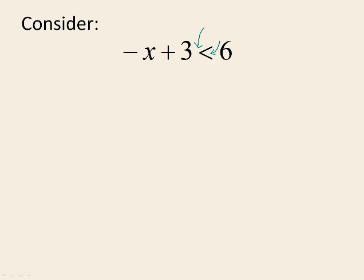Inequalities behave very much the same as equations in the sense that you can add and subtract things from both sides, and you can multiply and divide both sides. But there are one or two differences. If we wanted to solve this inequality, we want to get x by itself, so we start off by subtracting 3 from both sides. That leaves us with negative x is less than 3.